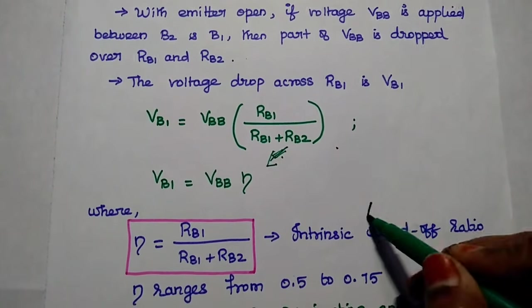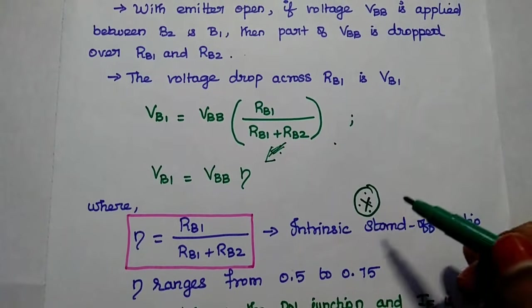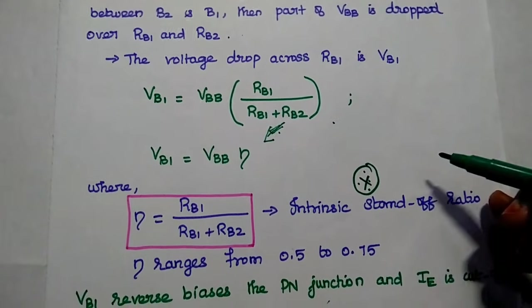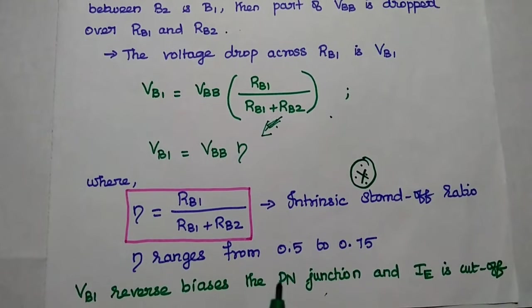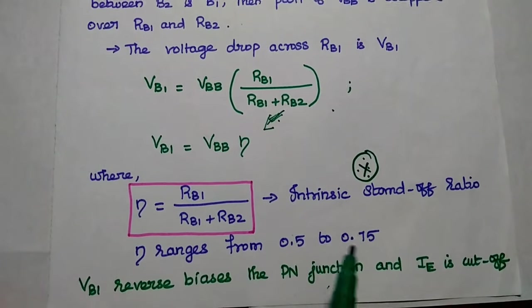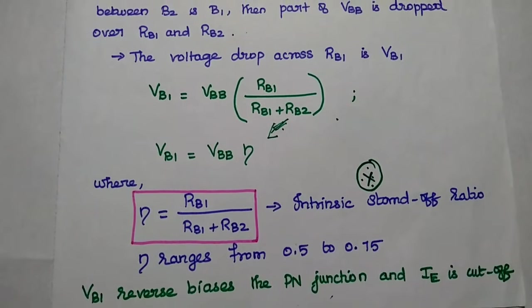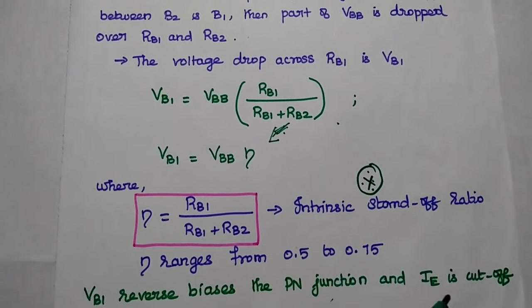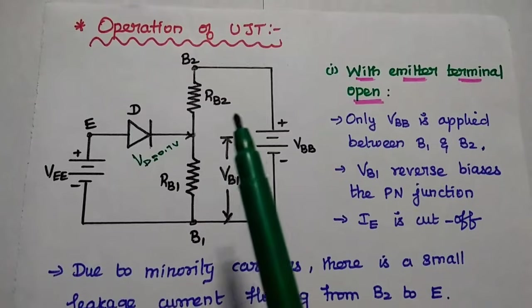This factor is important because it defines the reverse bias condition for the diode. This ratio should always be in the range of 0.5 to 0.75. VB1 reverse biases the PN junction and the emitter is in cutoff condition.